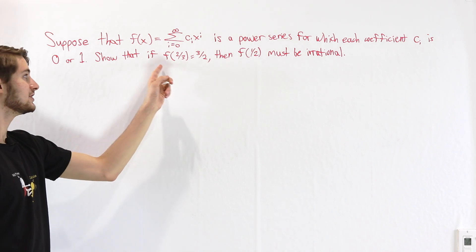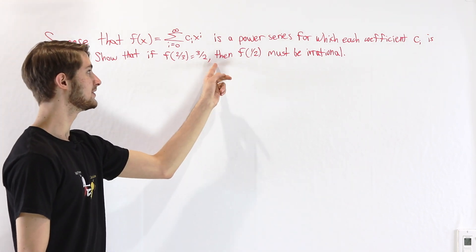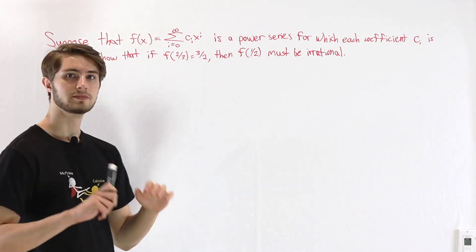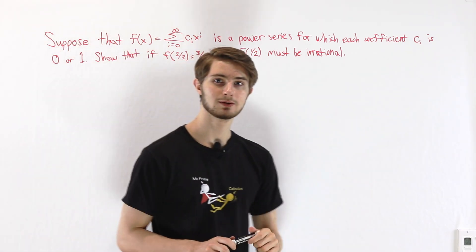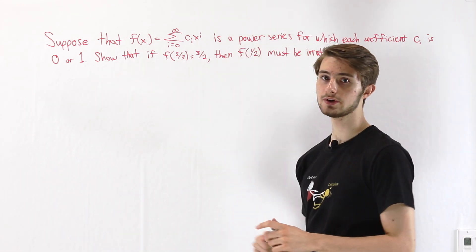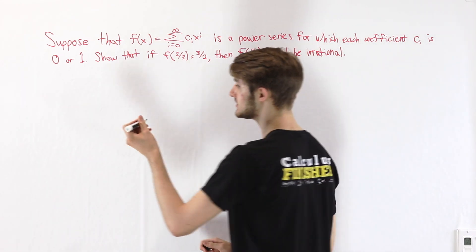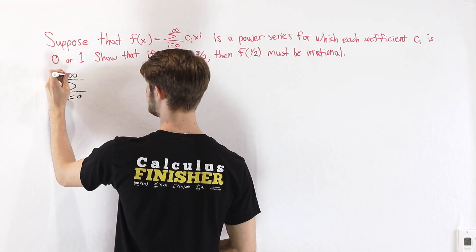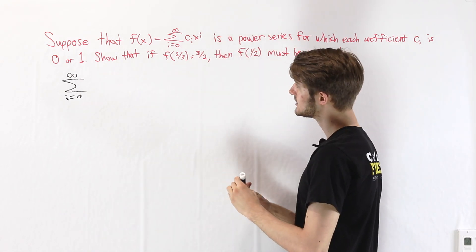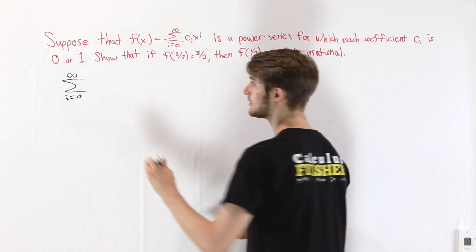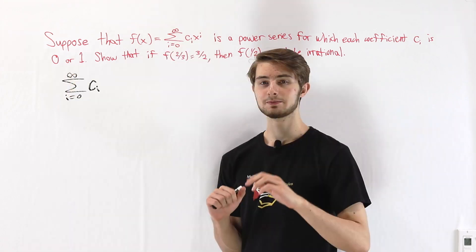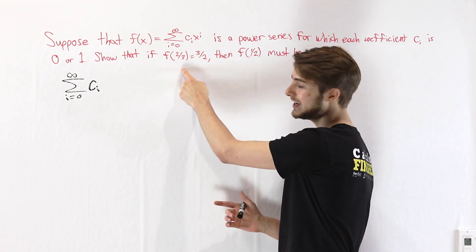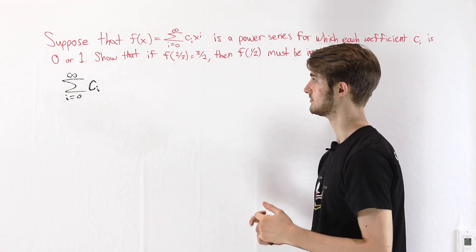Show that if f(2/3) equals 3/2, then f(1/2) must be irrational. This is a strange problem to approach because f(2/3) is a weird sum to think about — it's the sum from i equals 0 to infinity of c sub i times (2/3) to the power of i. Plugging in 2/3 is going to give us a kind of weird sum, and it's going to be hard to get any information out of that function value.